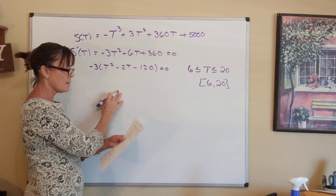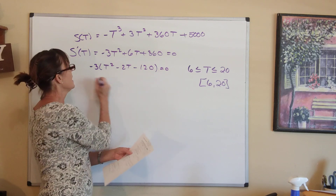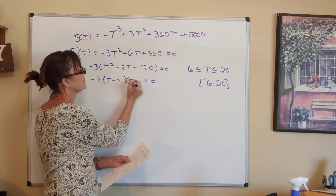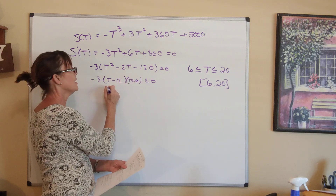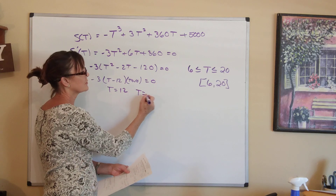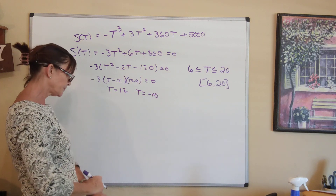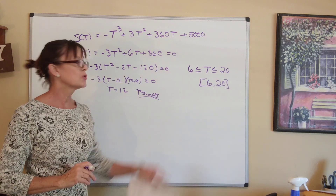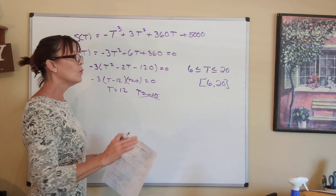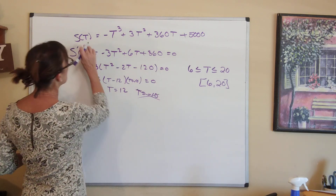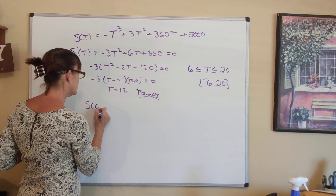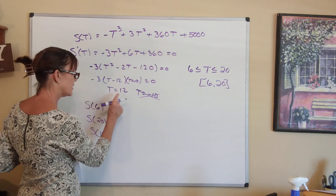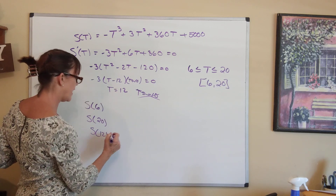This factors into (t − 12)(t + 10) = 0, giving critical values of t = 12 and t = −10. Since we're on the interval [6, 20], t = −10 is not on the interval, so we disregard it. We now test the endpoints and the critical value: S(6), S(20), and S(12).